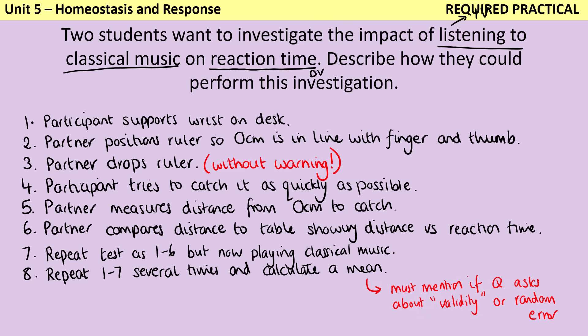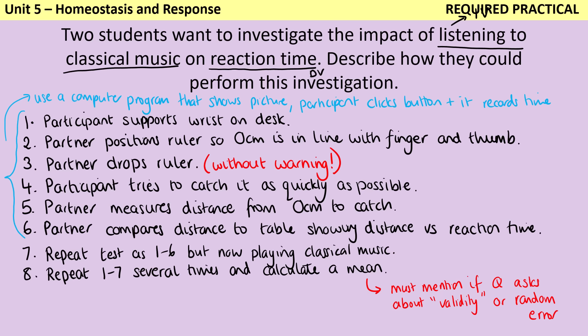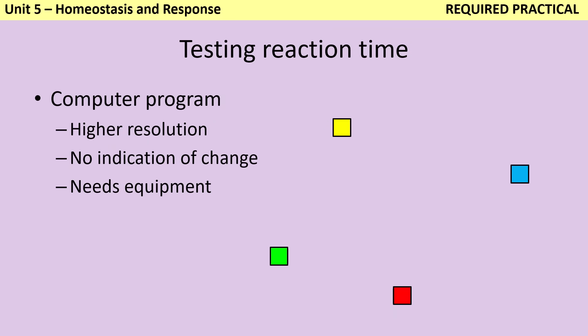It's particularly important that you discuss calculating a mean if the question asks about validity or random error. You don't have to do the ruler drop test unless the question explicitly tells you to — our other option is to use a computer program, say something that shows a picture on the screen, and you click the mouse as soon as you see that picture, which would be measuring your reaction time directly. Using a computer program allows you to collect higher resolution data and is more valid, because there's no way the computer can accidentally indicate it's about to show the object through body language. However, in order to use a computerised method, you need a computer and a program, which might not be available for everybody, so usually in school this isn't the method we would use.